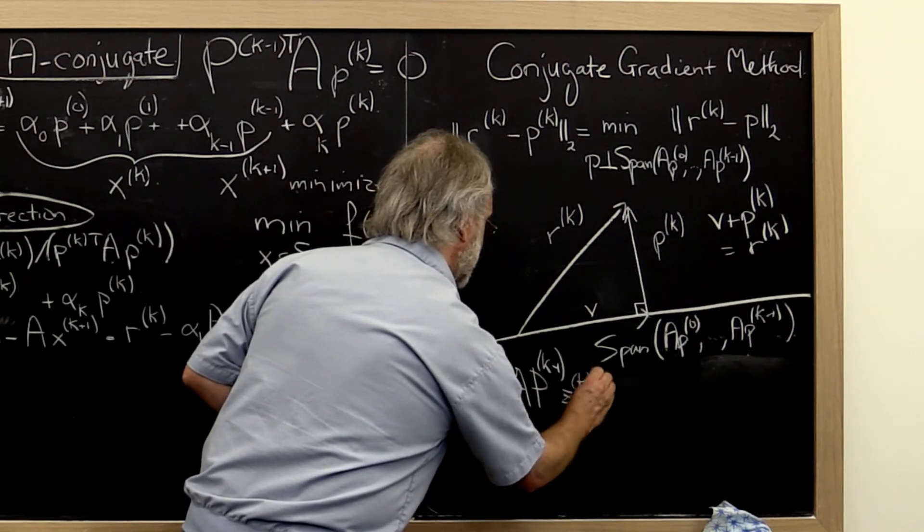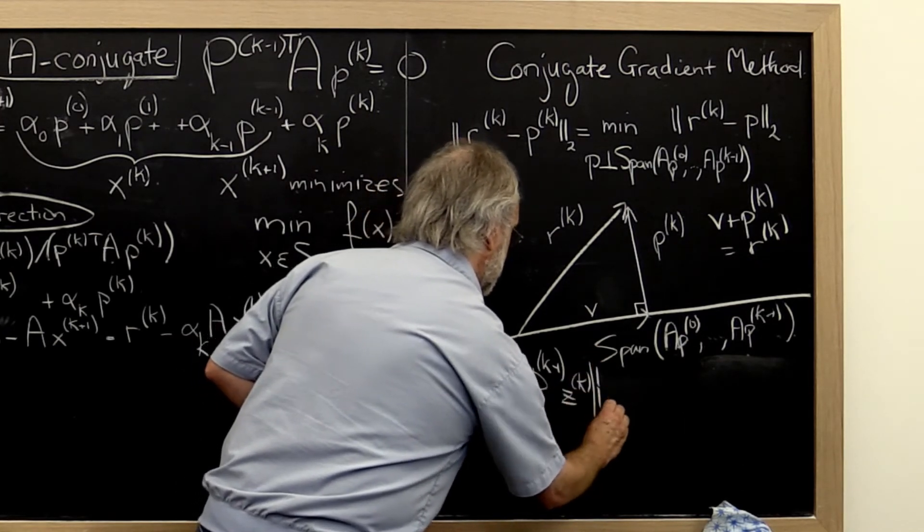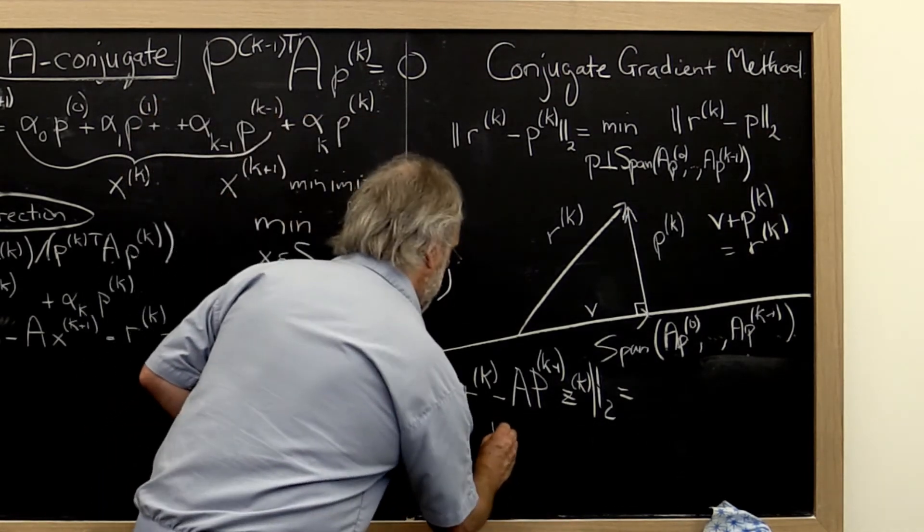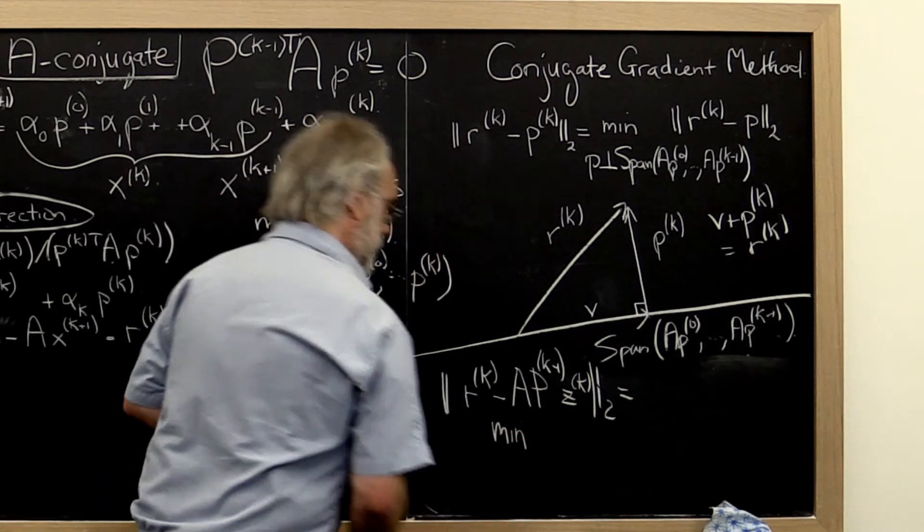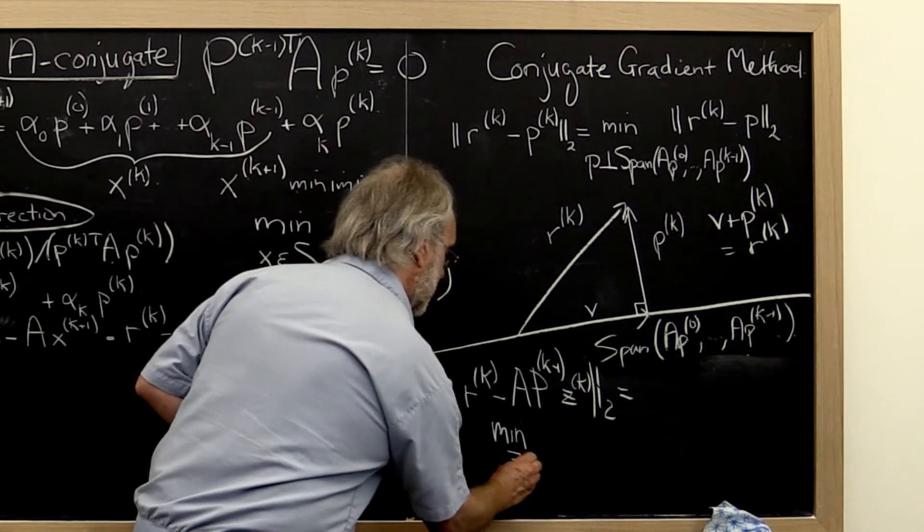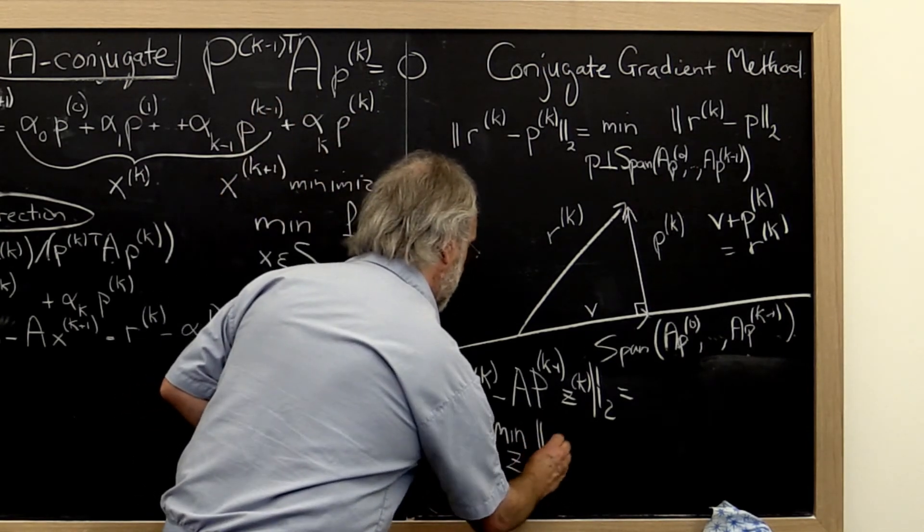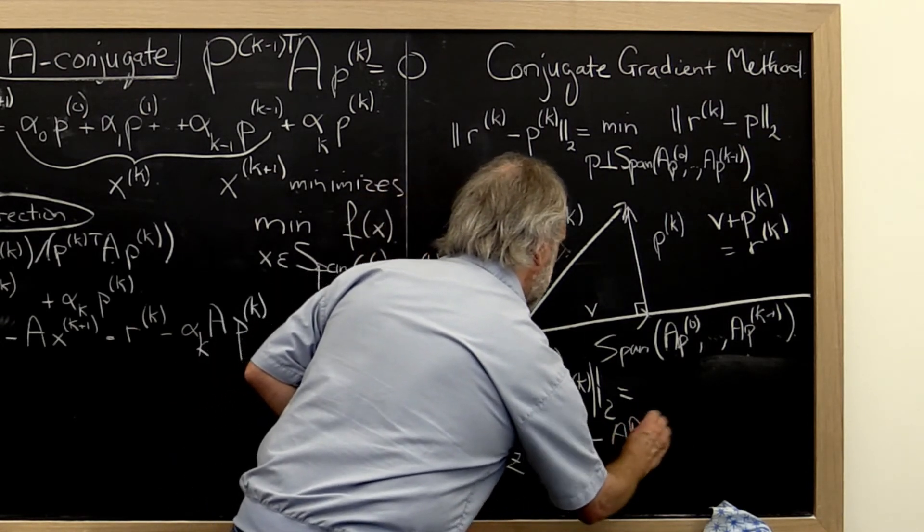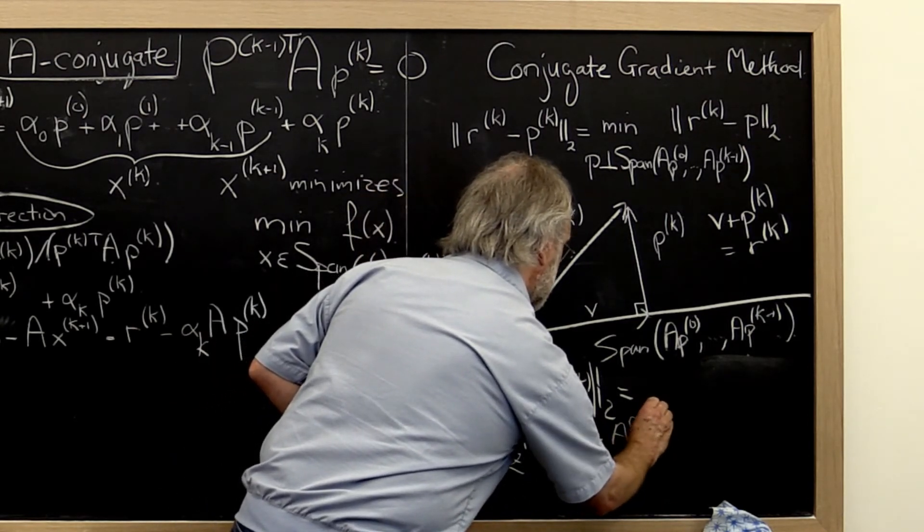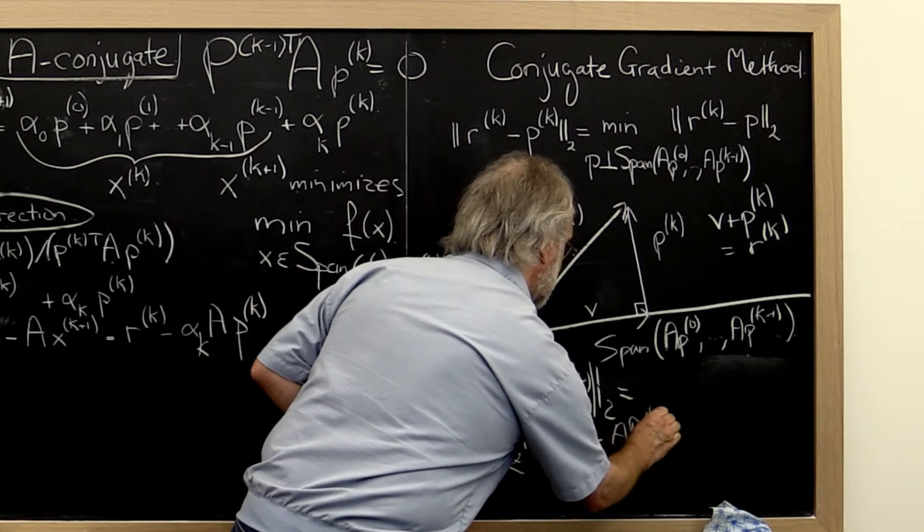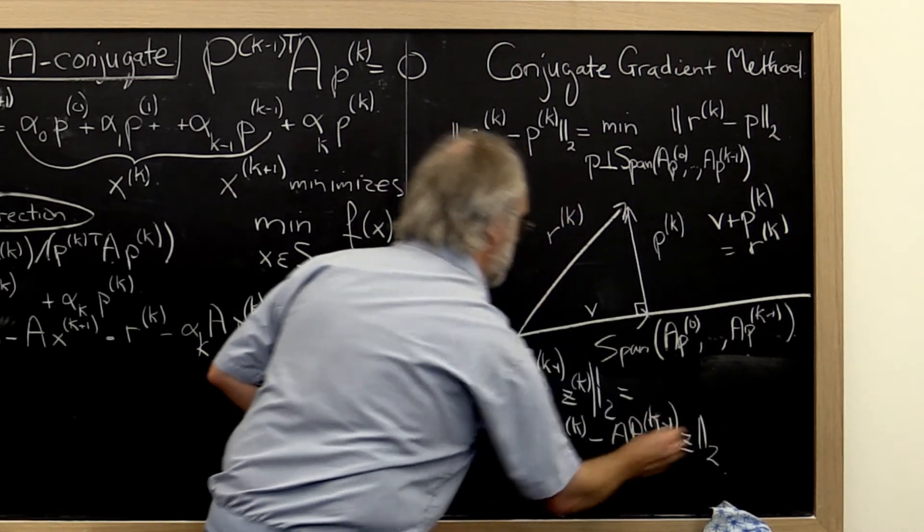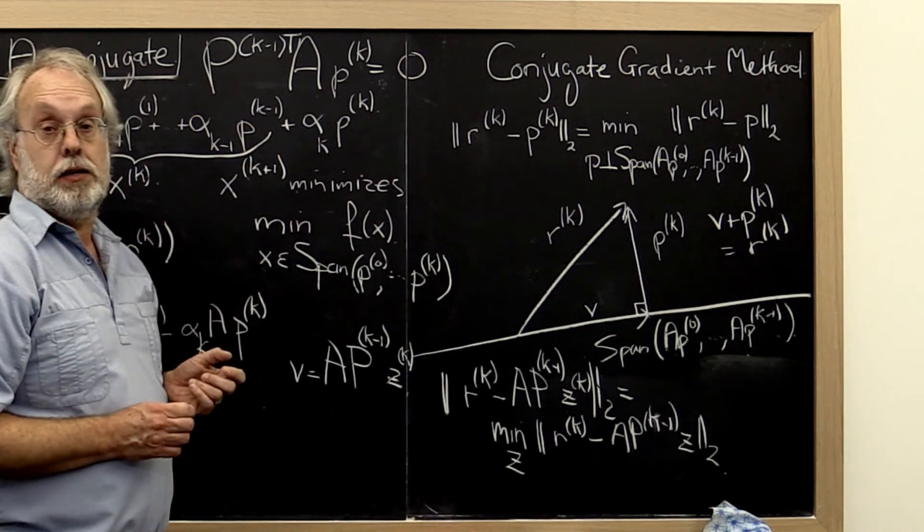We want to find that Zk and that needs to minimize the expression Rk minus A times Pk minus 1 times Zk into Rk. Okay?